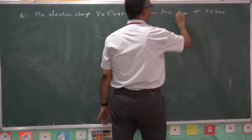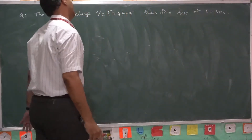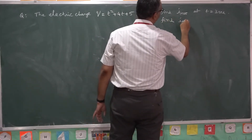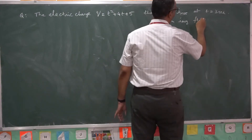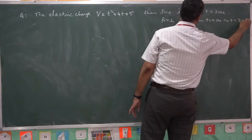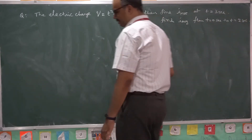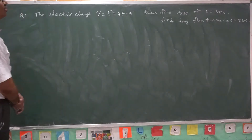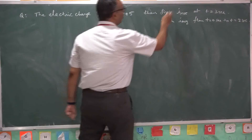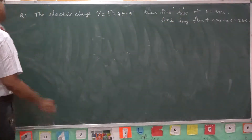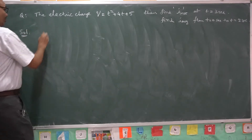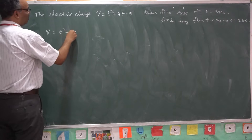At a particular instant of time, the current passing through the conductor is called instantaneous current. Also find average current from t = 0 seconds to t = 2 seconds. The solution is quite simple. You are given electric charge Q = t² + 4t + 5. Electric charge is a function of time.